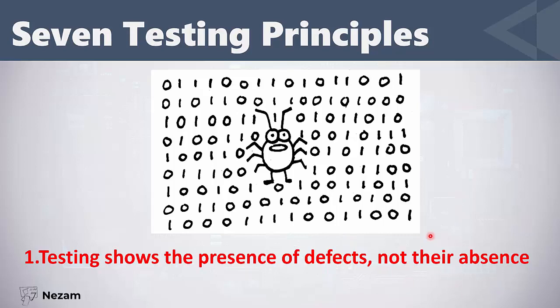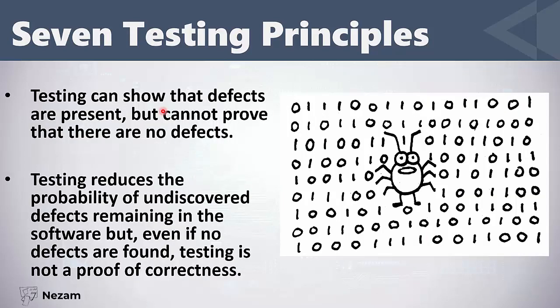Using software testing we can show the defects that are present, but we cannot prove that there are no defects. When we do testing and we don't find defects, that does not mean there are no defects in the software. Testing just reduces the probability of undiscovered defects remaining, but it cannot be a proof of correctness.